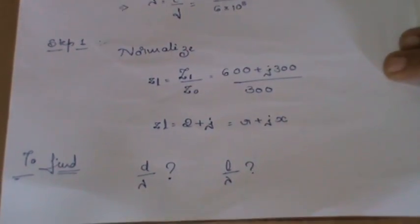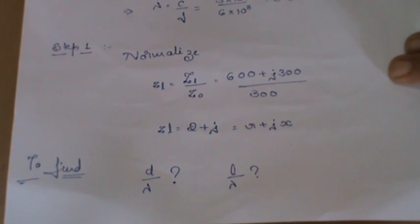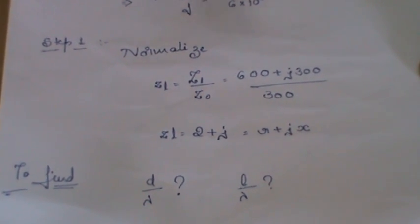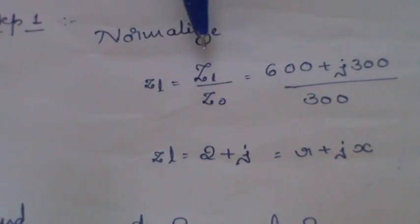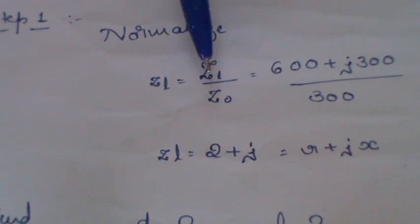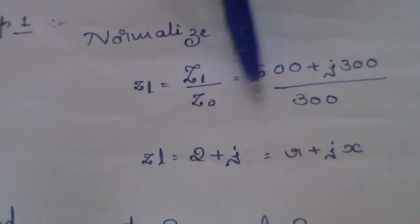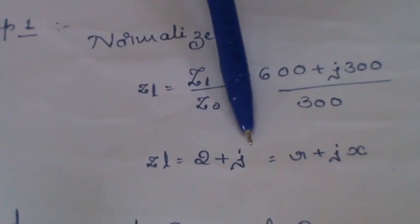Before going to that, whenever you use a Smith chart, first step you need to do is normalization. Normalization is nothing but dividing the load impedance by characteristic impedance. So I get it around 2 plus j1.